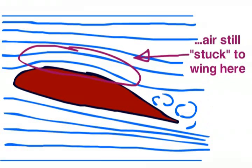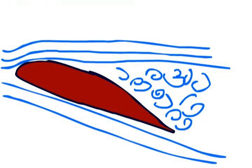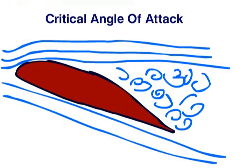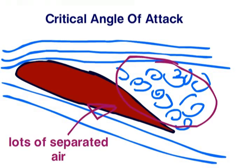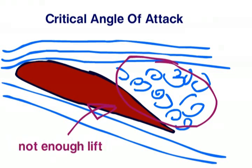At a certain point, known as the critical angle of attack, there will be so much of this separated air that the wing no longer generates sufficient lift. This is a stall.